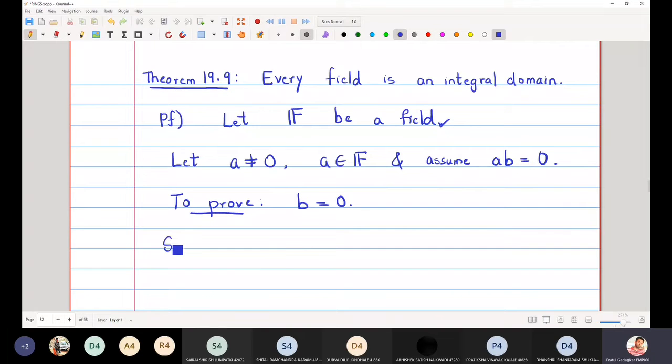So since A is not equal to zero and A is in the field, we know that in a field you can find the multiplicative inverse of A.